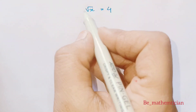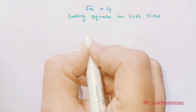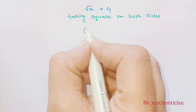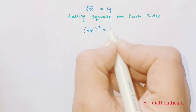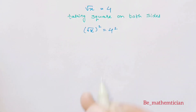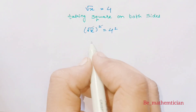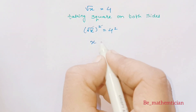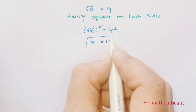To remove this square root, let's do squaring on both sides. We get the square root of x whole squared is equal to 4 squared. The square and square root get cancelled, so the remaining will be x is equal to 16.